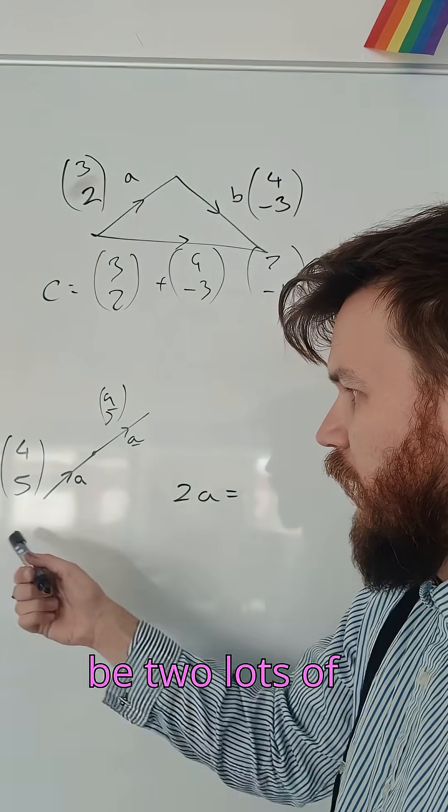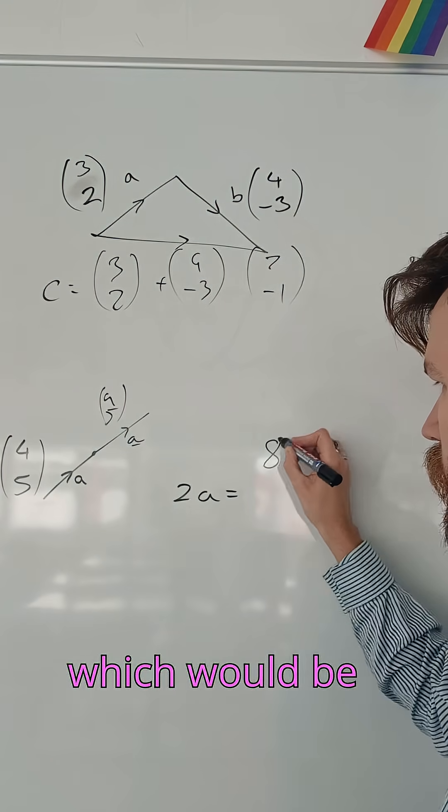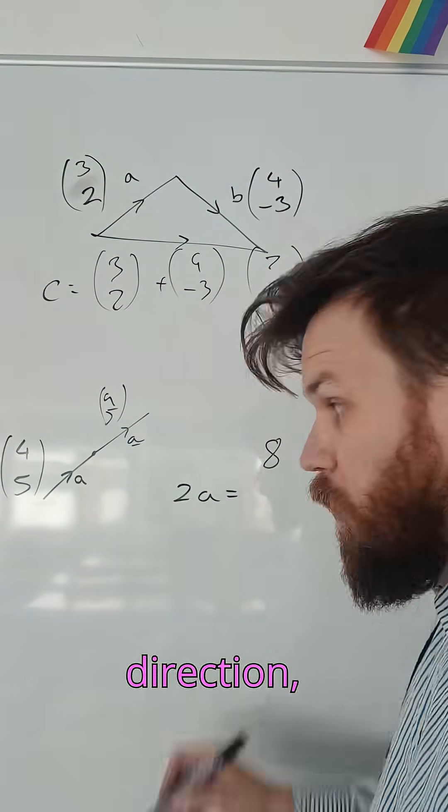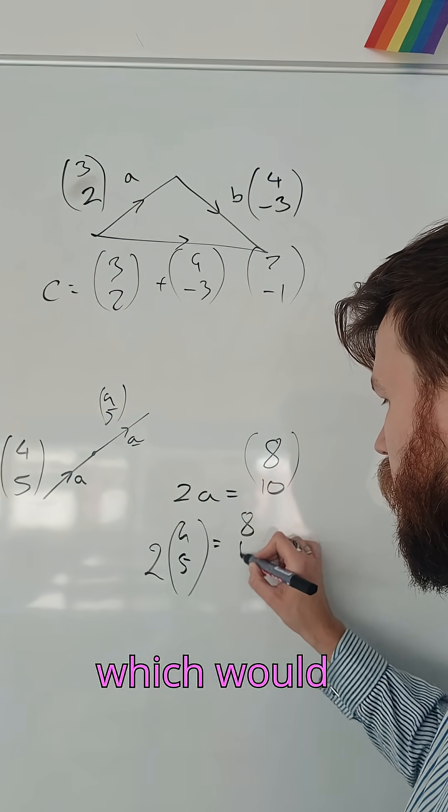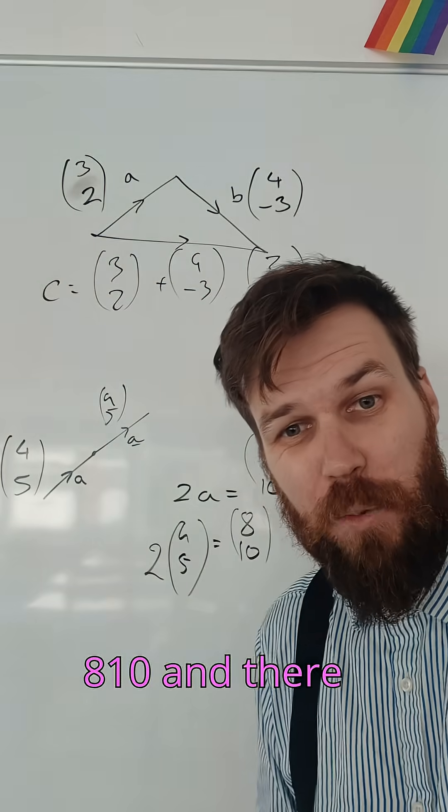So two lots of this vector A would be two lots of this x direction which would be eight and two lots of this five direction which would be ten. I could write it as two lots of four or five which would then give me eight, ten. And there we go.